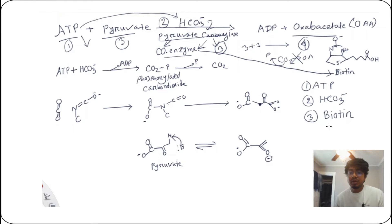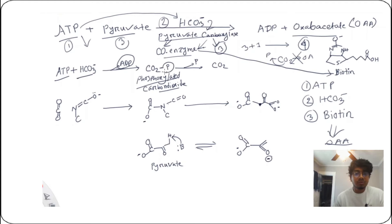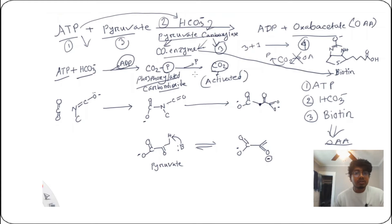Three reactions will happen and finally we will get oxaloacetate. First, ATP will react with bicarbonate, producing ADP as a byproduct and yielding phosphorylated carbon dioxide. The second reaction removes that phosphate group and produces carbon dioxide — but this is activated carbon dioxide.